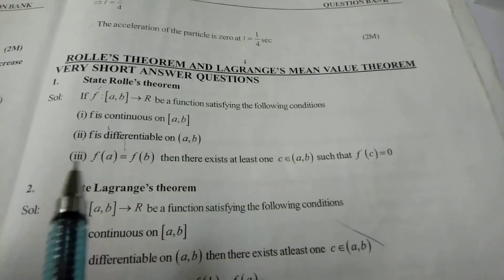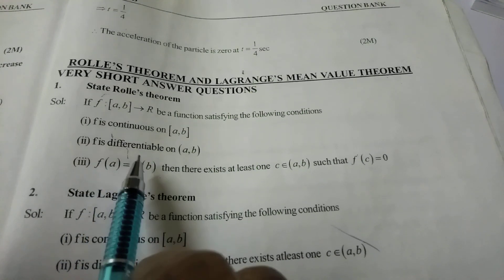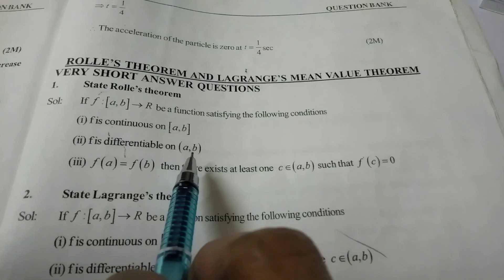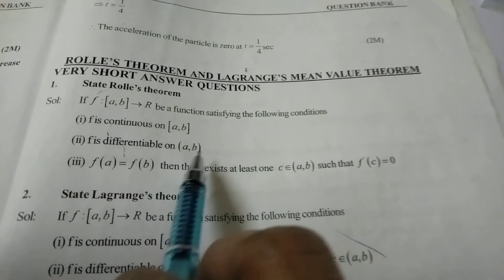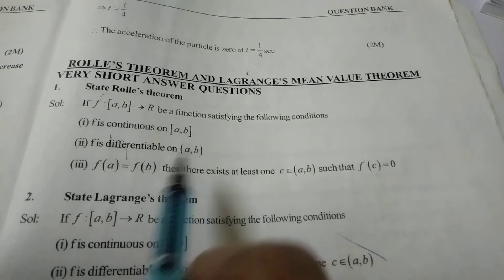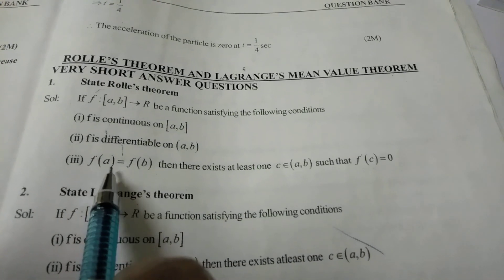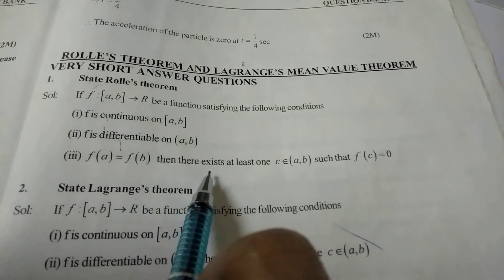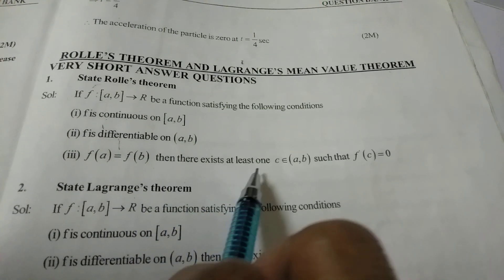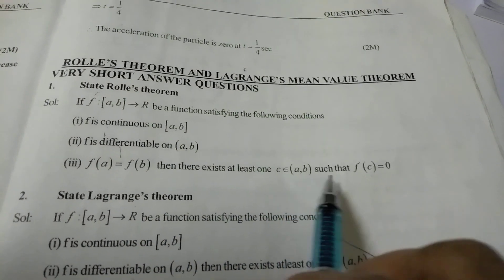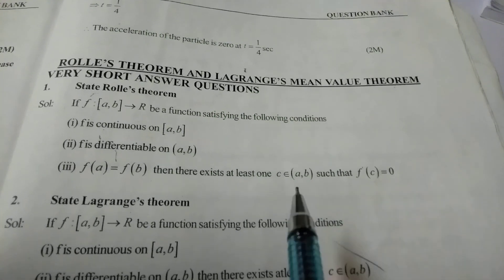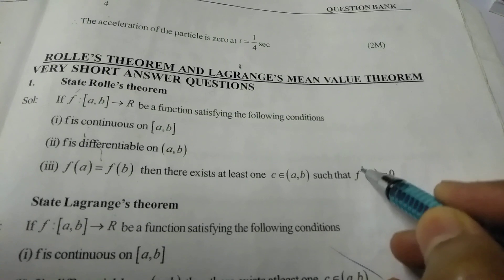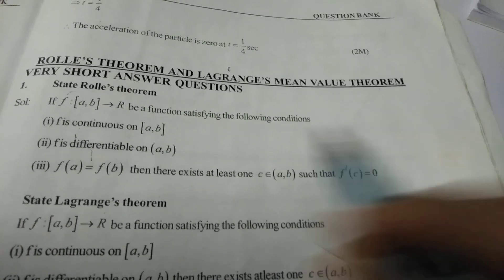Second condition: f is differentiable on the open bracket (a, b) — differentiable means on the open interval, the endpoint values are not included. Third condition: f(a) = f(b). Then there exists at least one c belonging to (a, b) such that f'(c) = 0.